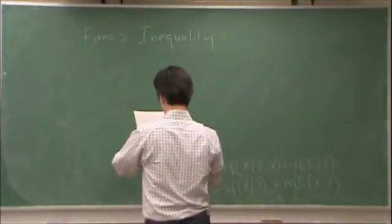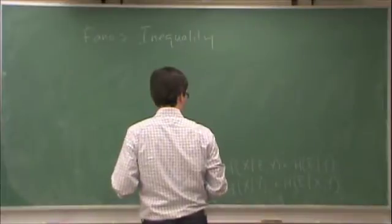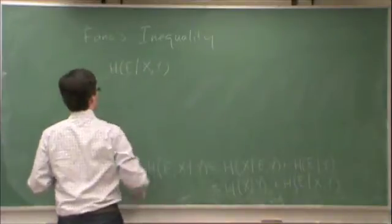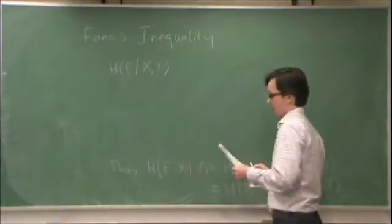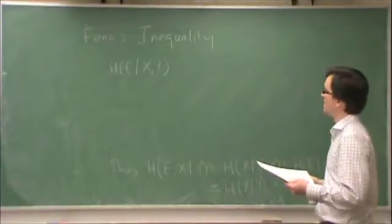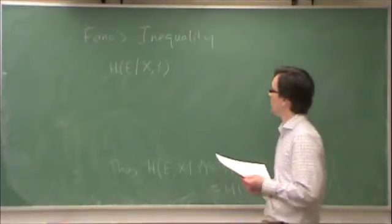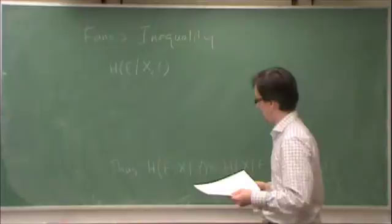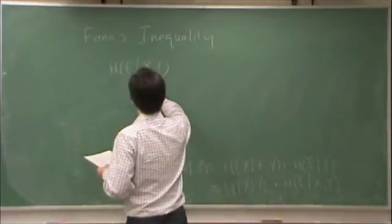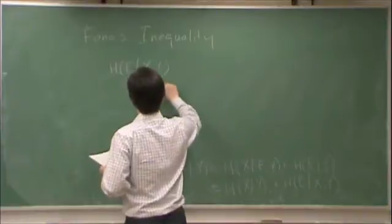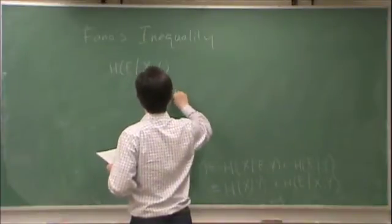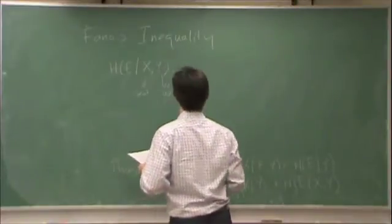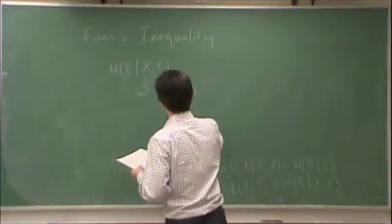So, a few remarks on these terms. Firstly, h of e given x and y. So, if I know what x is, then I know what was sent. If I know what y is, then I know x hat. So, this is what was sent, y, g of y, and the deterministic function g, is x hat, so I know what was detected or received.